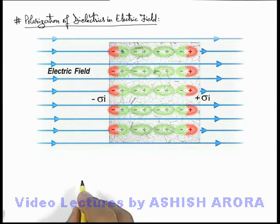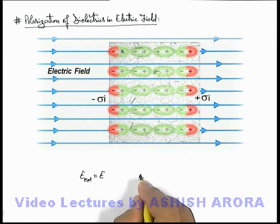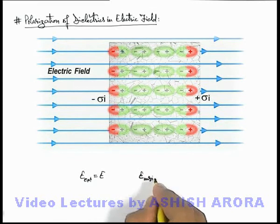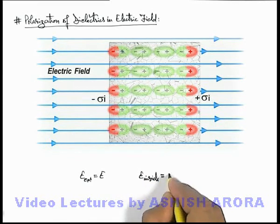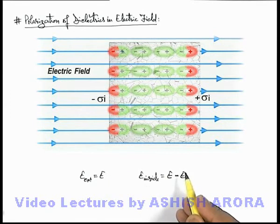So here we can write that if external electric field is equal to E, then electric field inside the dielectric slab we can write as equal to external field minus the electric field due to polarization of this dielectric slab. This whole phenomenon we call dielectric polarization.